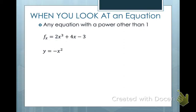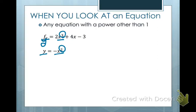Now let's look at ones that are not linear. This one says f of x equals 2x to the third plus 4x minus 3. F of x is y, raised to the first power, but the first variable x is raised to the third power, so this is not a linear equation. Looking at the second one, y equals negative x squared — my y is raised to the first power, but my x is raised to the second power. So this is not a linear equation.